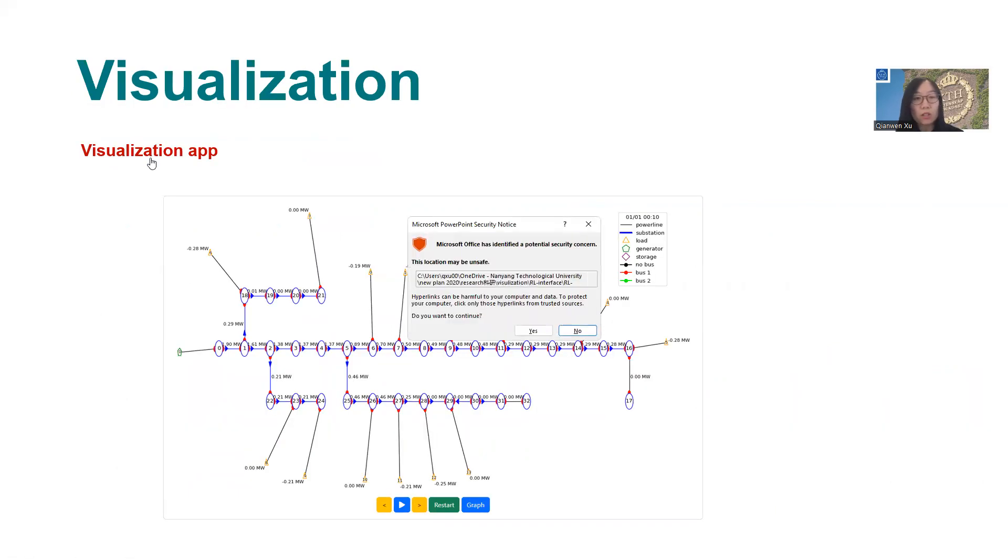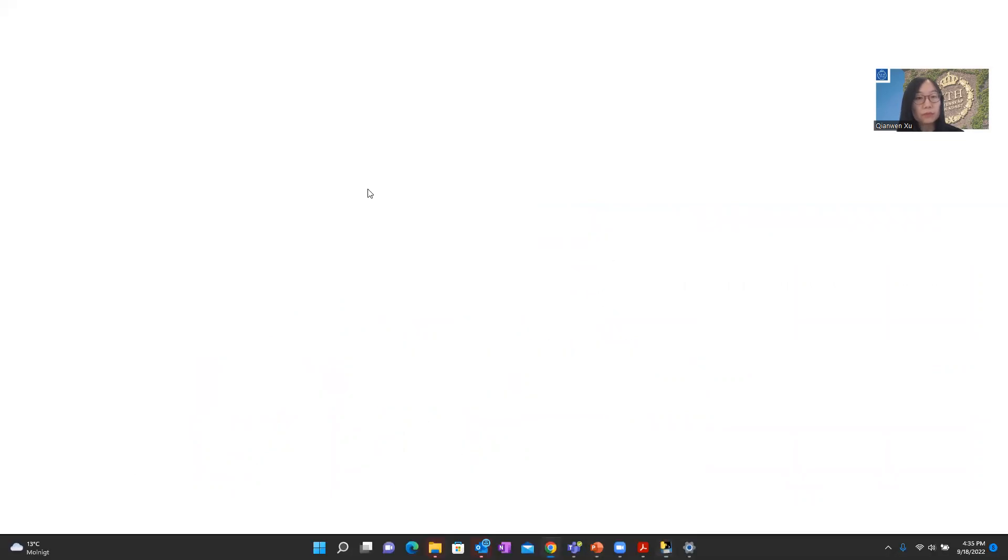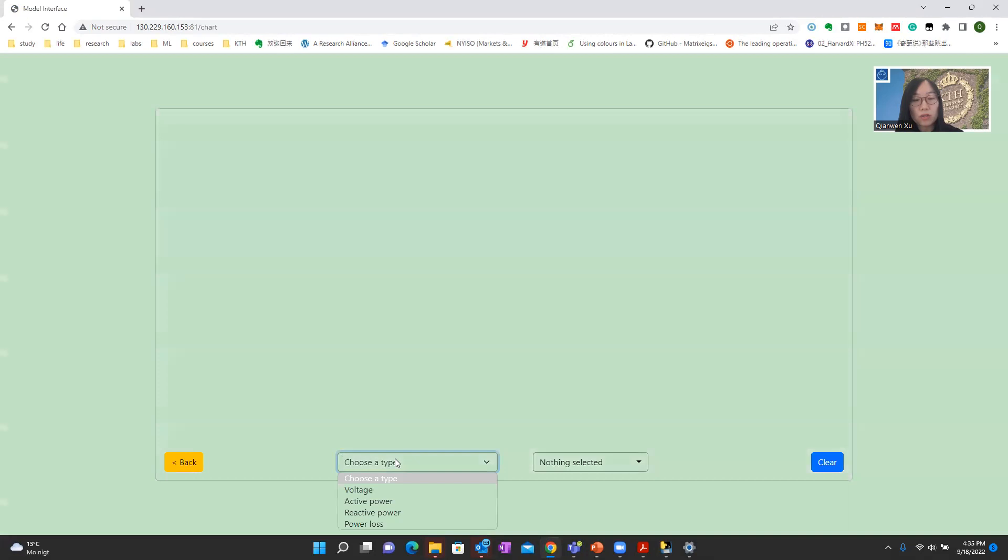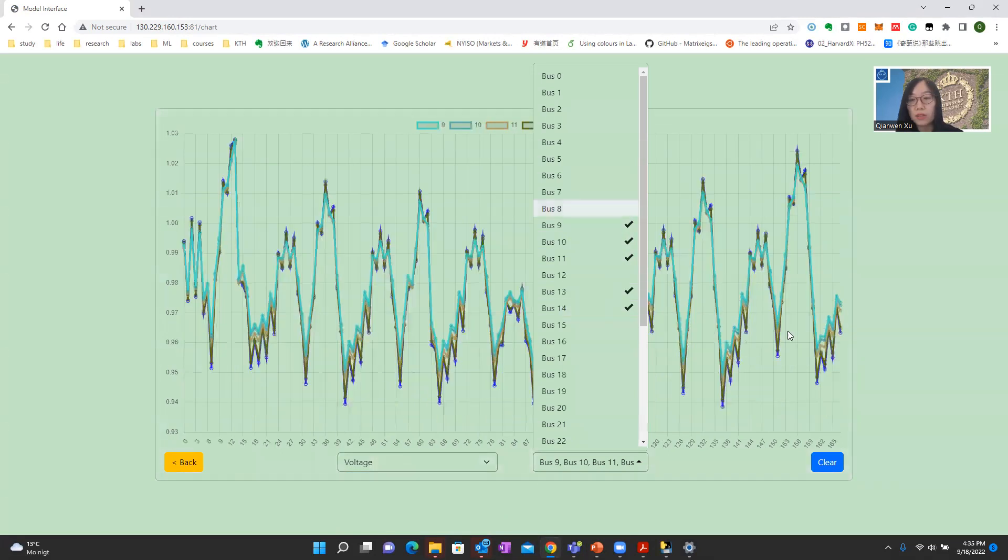We also developed a visualization app. Let's open it. This visualization app can show the real-time power flow of the grid. So let's start. We can see it shows the real-time power at each node, and we can also see the voltage, active power, reactive power, and power loss profile of all buses. So, for example, the voltage of these buses.